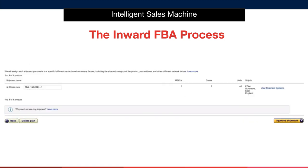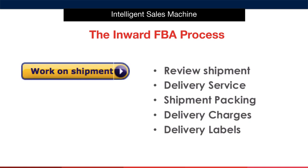Amazon will now start to produce an inward order or orders for you to work on. You can name the order if you wish; however, Amazon will auto-name it as the date and time of the start of production, which is a very effective name. All you have to do is approve the shipment or shipments. At this point, Amazon has your shipments ready to work on — click on 'Work on Shipment.' You will need to do this for every order Amazon has created, which may be one or multiple depending on your product, your numbers, and their system.